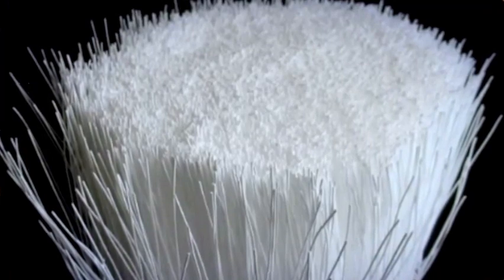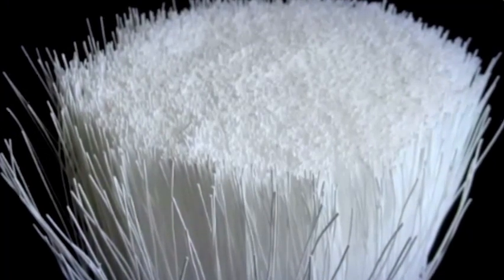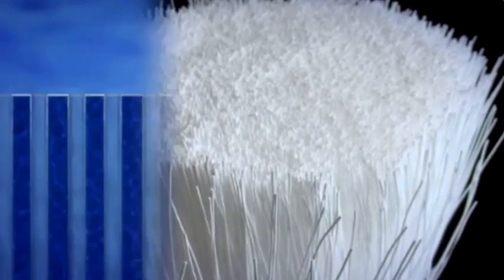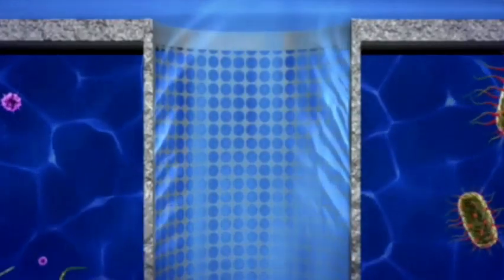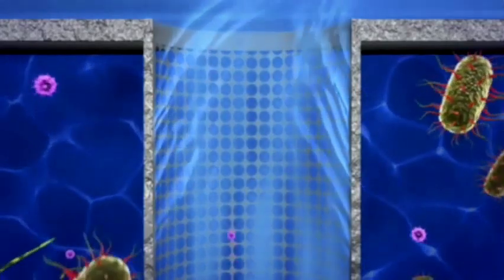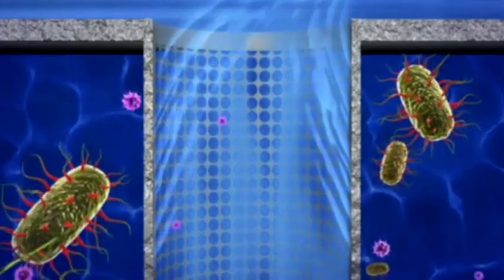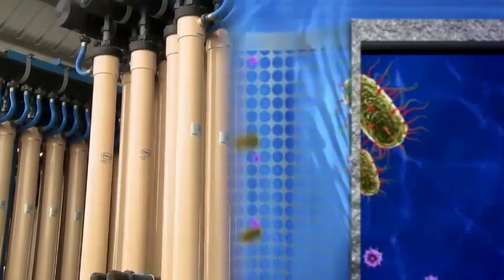The outer wall of each fibre is made up of tiny pores only 0.1 micron in size, or about 300 times smaller than the width of a human hair. The fibres filter out microscopic particles such as silt, protozoan cysts, bacteria and even viruses.